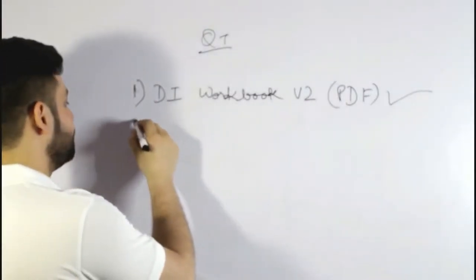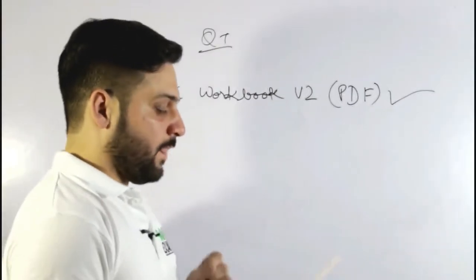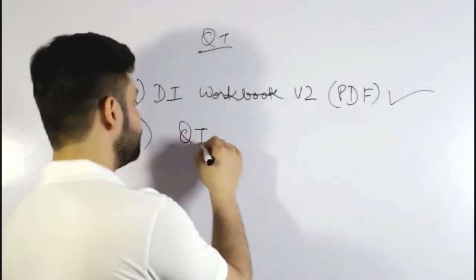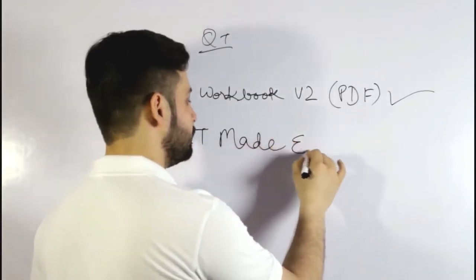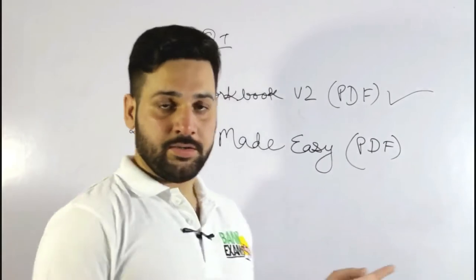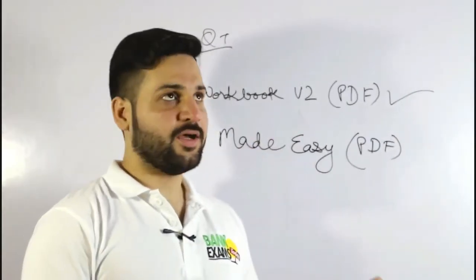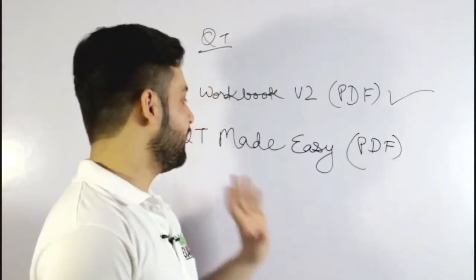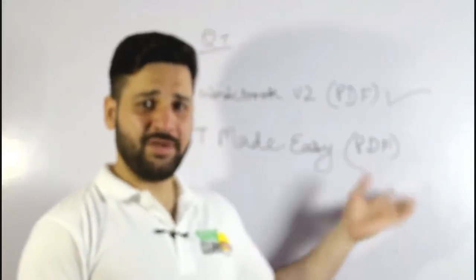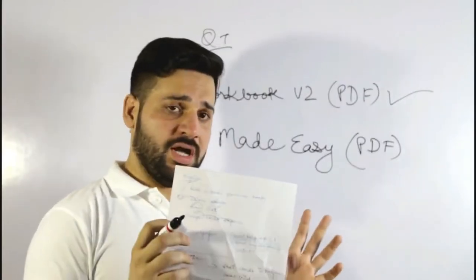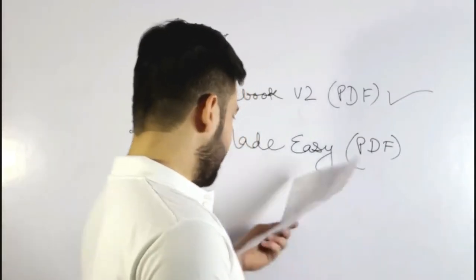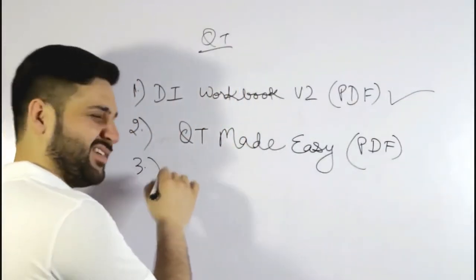The second thing I recommend for the quantitative aptitude part is to get the QT Made Easy book. This ebook is available in PDF version. I've made this book based on current examination trends, so I recommend QT Made Easy — it's a good book.